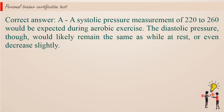Correct answer a. A systolic pressure measurement of 220–260 would be expected during aerobic exercise. The diastolic pressure, though, would likely remain the same as while at rest, or even decrease slightly.